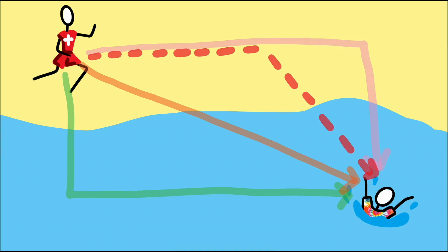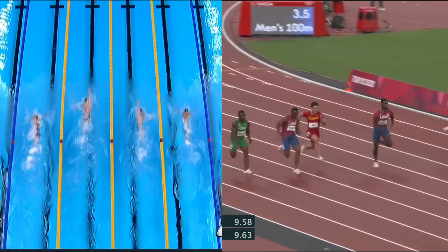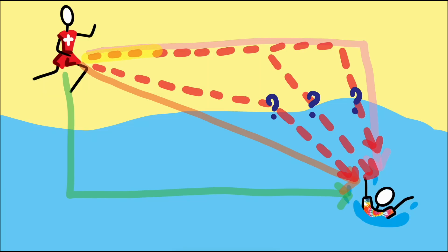So logically she could run further down the beach before getting into the water to save some time, but how much farther? Well, that would depend on how much faster she can run than swim. Running much faster would mean she could stay on the beach longer, but swimming almost as fast as she runs means she should jump in closer than if she was traveling in a straight line.